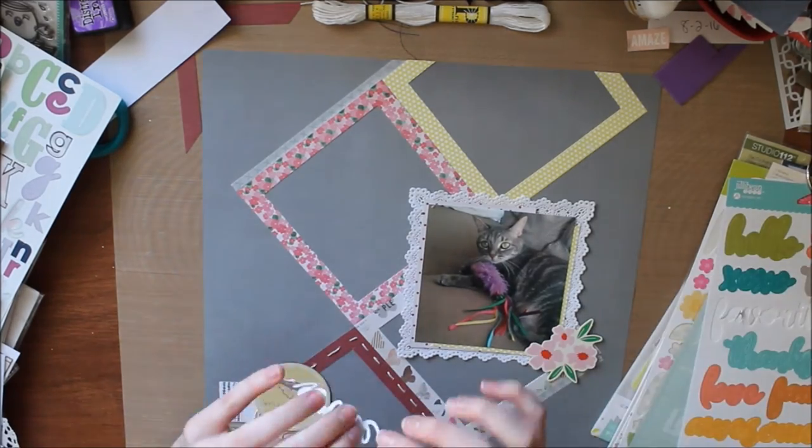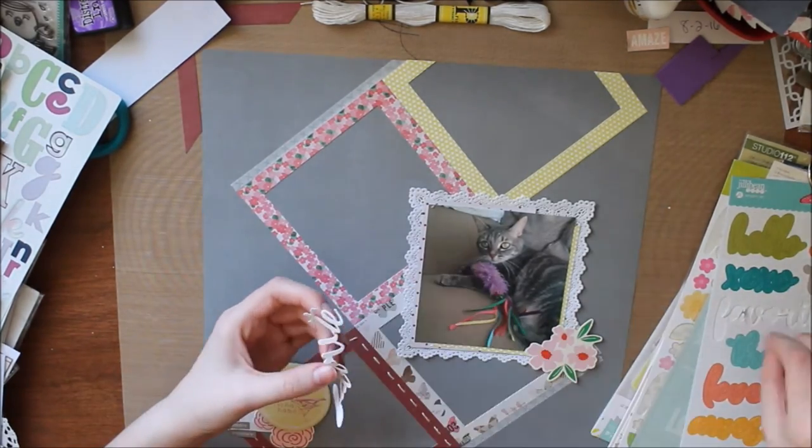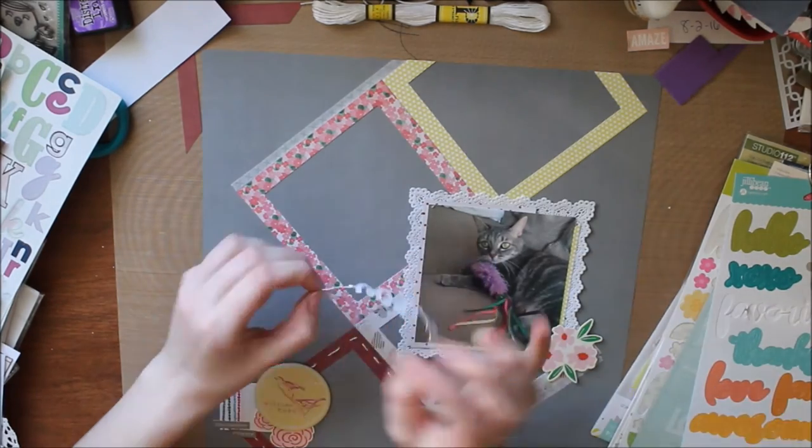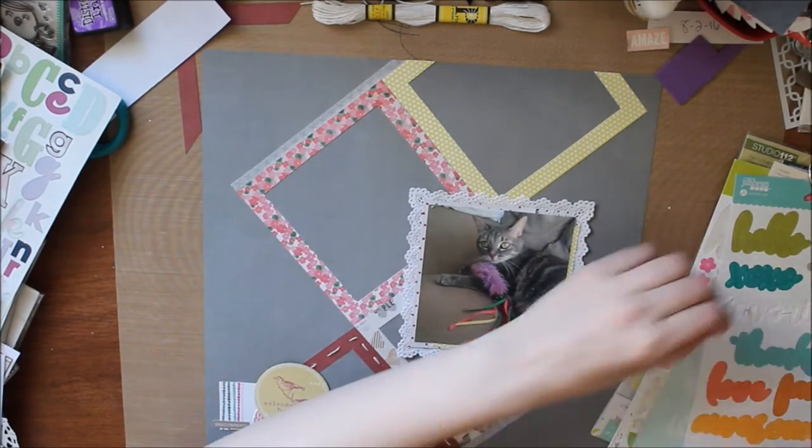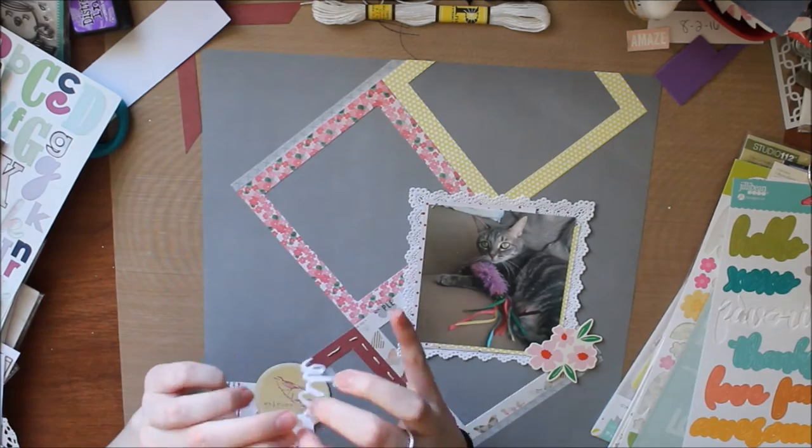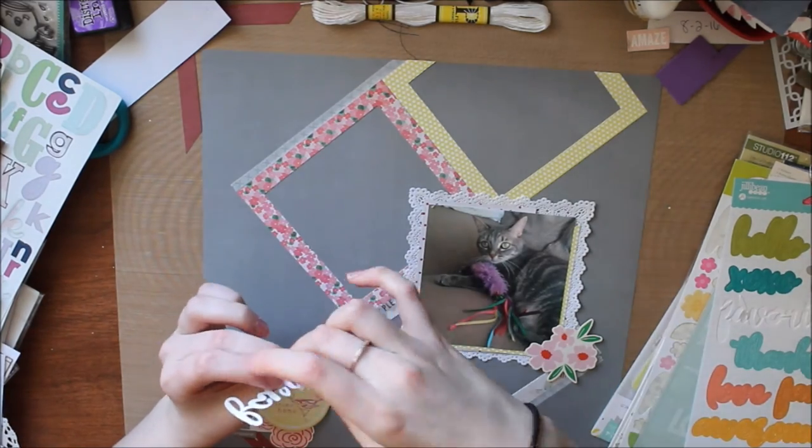Now I'm going to work on my title piece and I find this Jelly Bean Soup sticker that I purchased at scrapbook.com that said favorite. Which is perfect because it's going to go for the title as you can tell from the title of this video. The layout is going to be titled her favorite toy and this is my cat with her favorite toy.